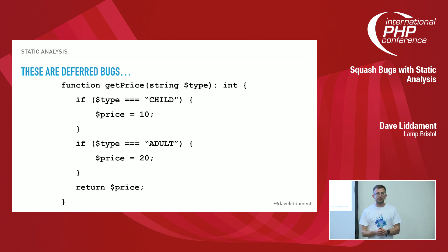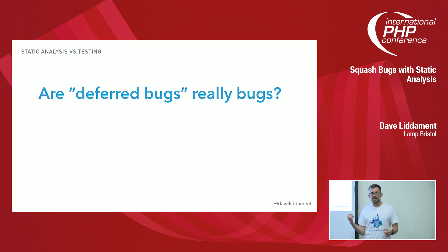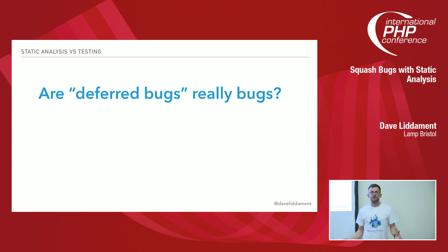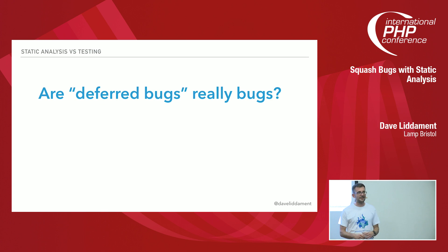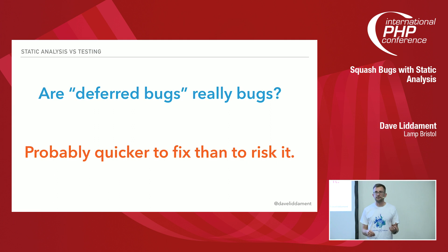Then we've got deferred bugs, like the getPrice example from earlier. The code works as long as we always pass 'child' or 'adult' as the type. Lots of discussions I had when selling this tool went like: 'these things aren't really bugs, are they?' They'd go away, look at the three places getPrice was called, confirm they always use 'child' or 'adult', and say it's fine — it took half an hour to work that out. And I'd say, OK, but do we know from now until the end of this project that we'll always call getPrice with just those two values? You just don't know. Often it's quicker to fix these bugs than to risk them.